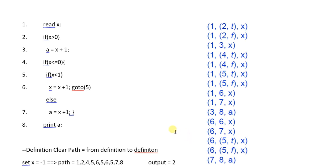Dear listeners, now we discuss an example of data flow testing. In this example we have a code snippet — a very simple code. As I discussed earlier in the previous lecture, for data flow testing, first of all we define some paths that we will follow to analyze the code.